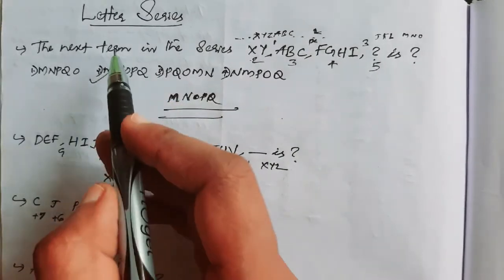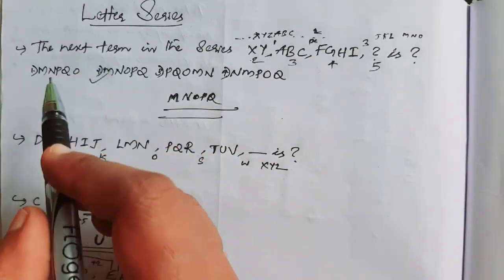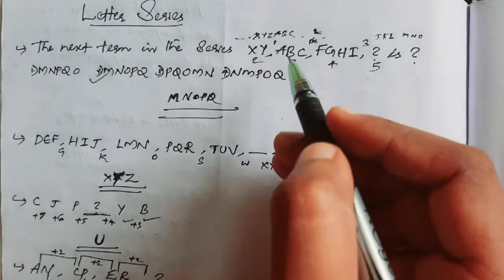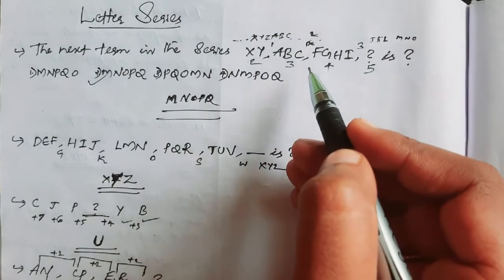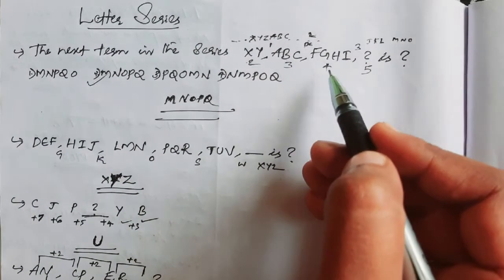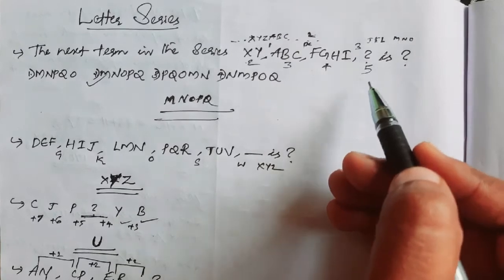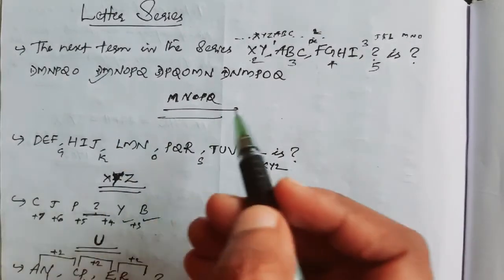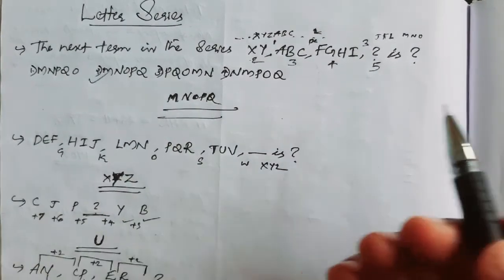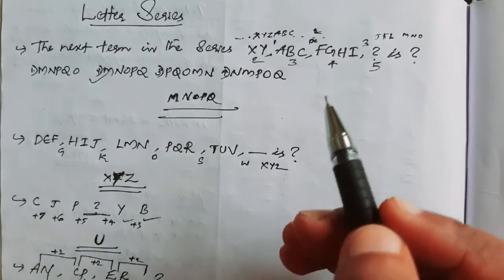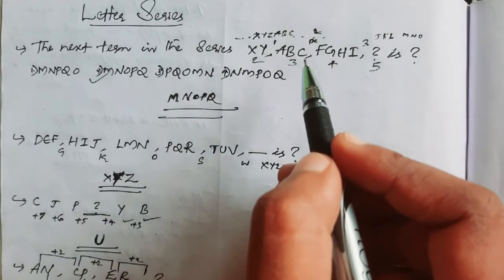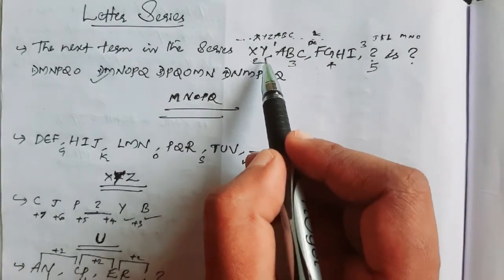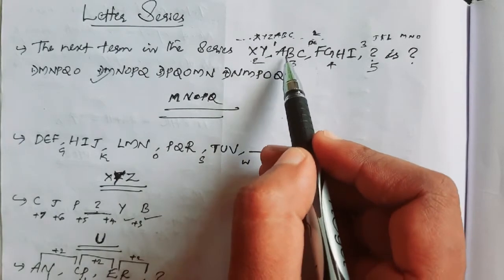The first question: find the next term in the series — XY, ABC, FGHI, question mark — and there are four answer options. We need to examine the first term and the second term carefully.